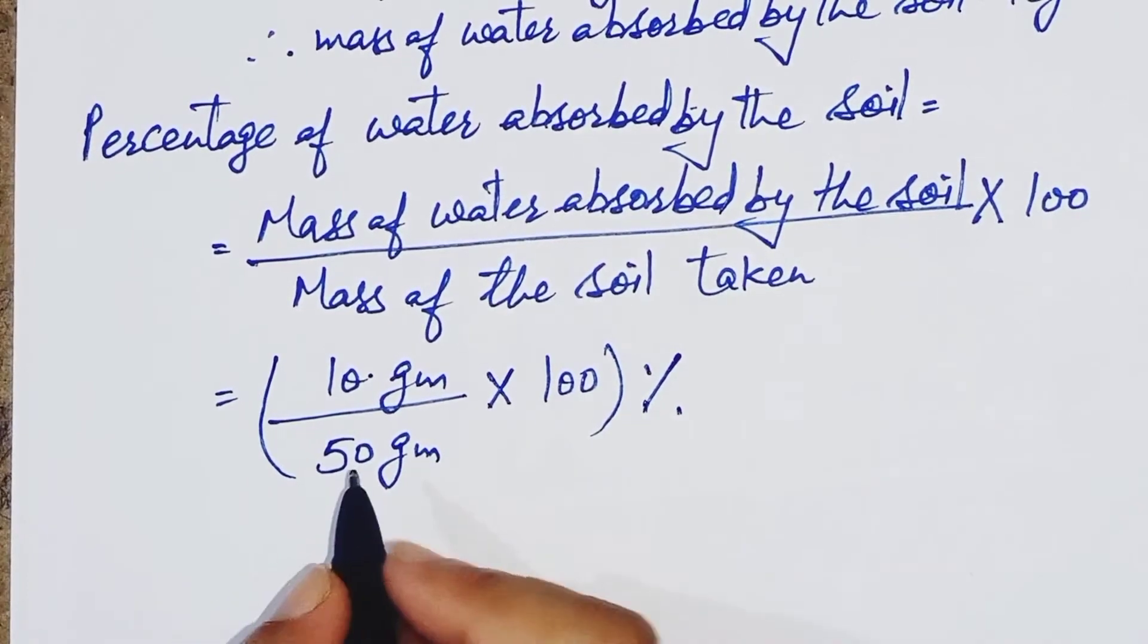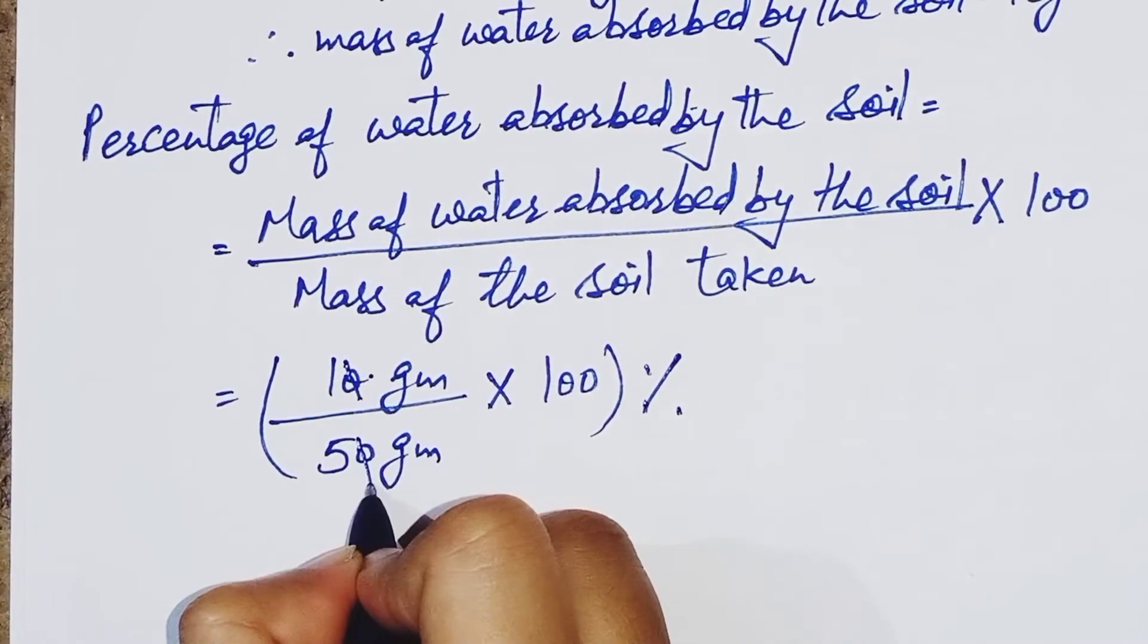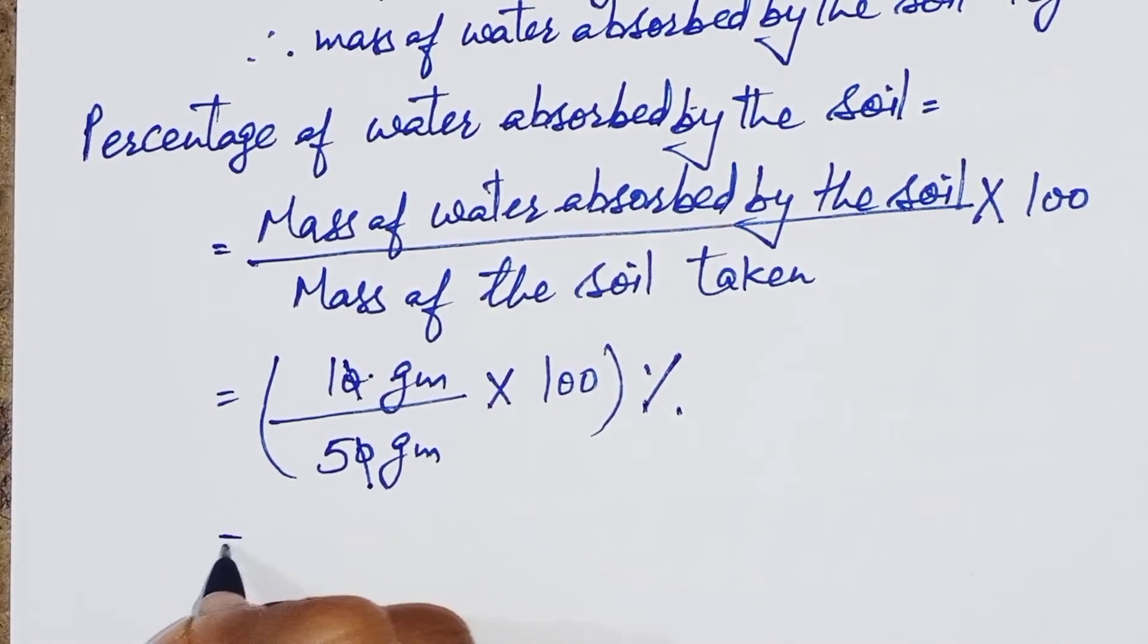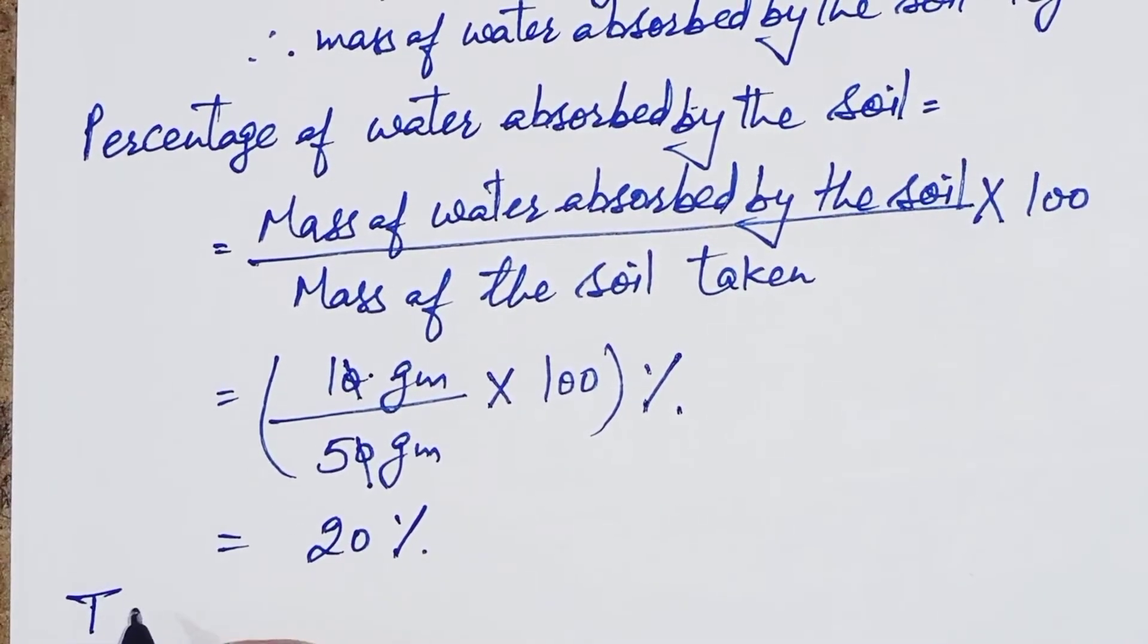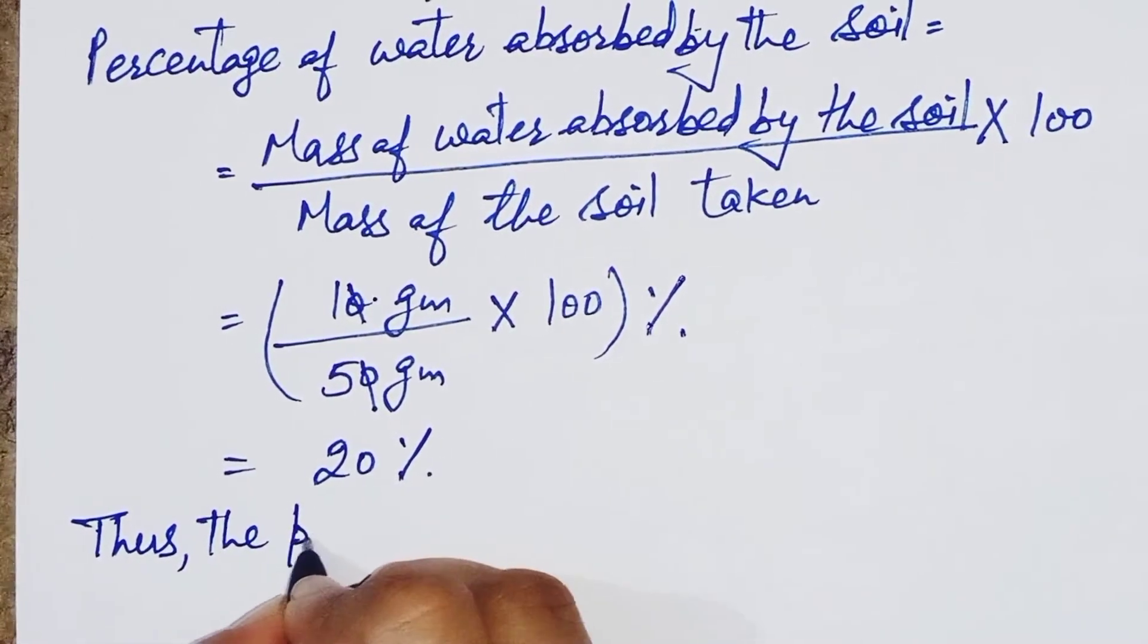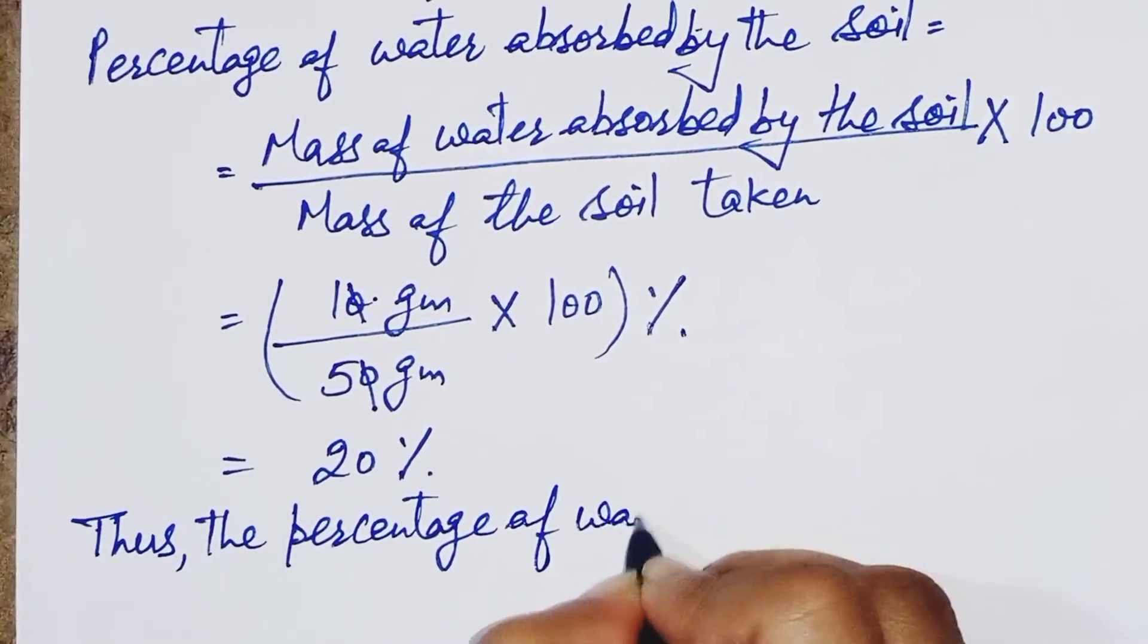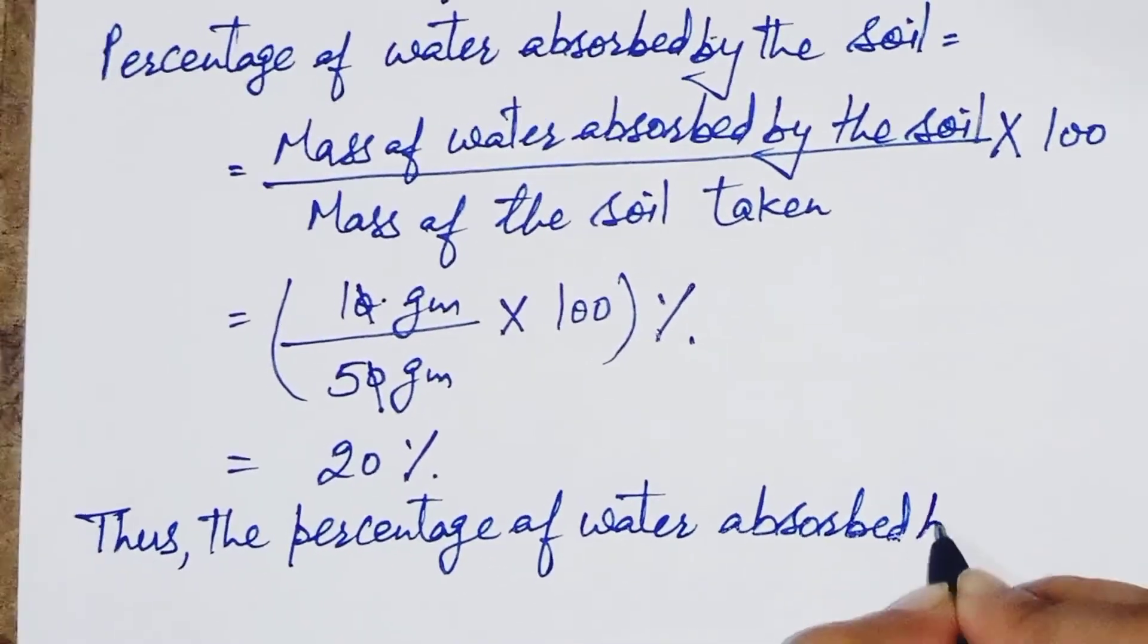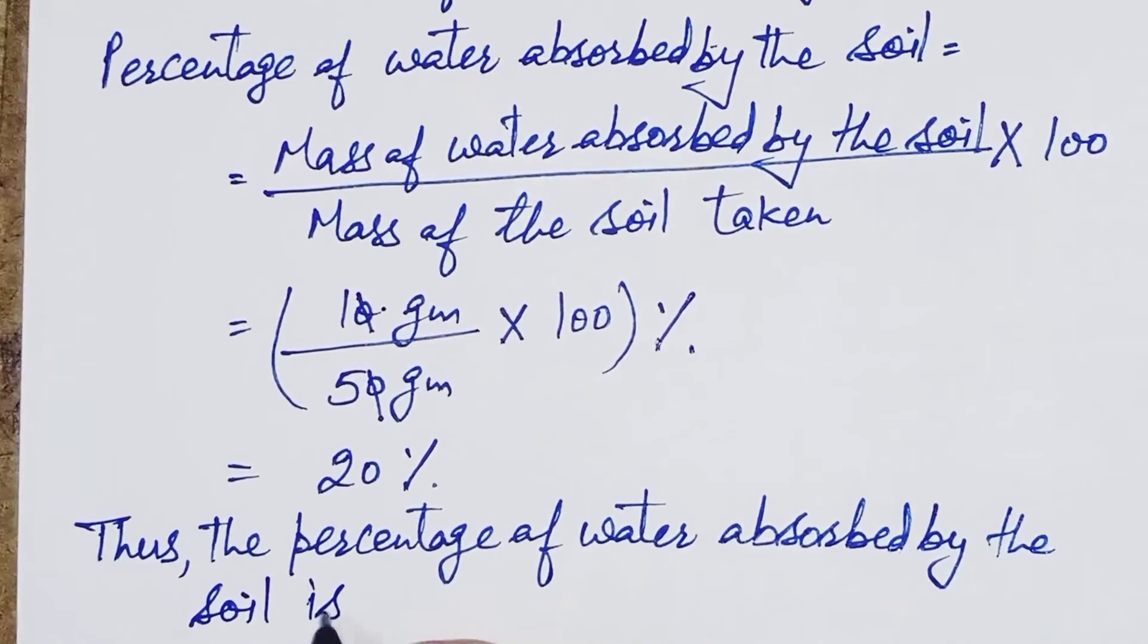Now first of all cancel out zero to zero, divide 100 by 5, you will get 20%. Thus the percentage of water absorbed by the soil is 20%.